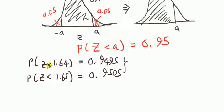I've written it down here. Probability that z is less than 1.64 is 0.9495. Probability that z is less than 1.65 is 0.9505. Our 0.95 is between these two. So, it must mean our answer is also between 1.64 and 1.65.